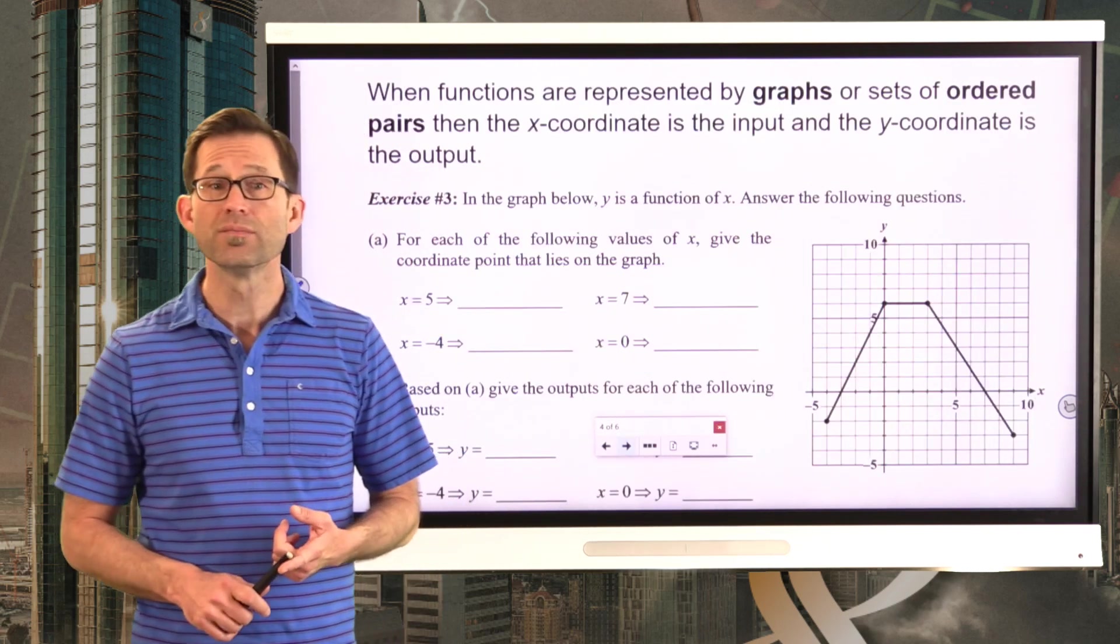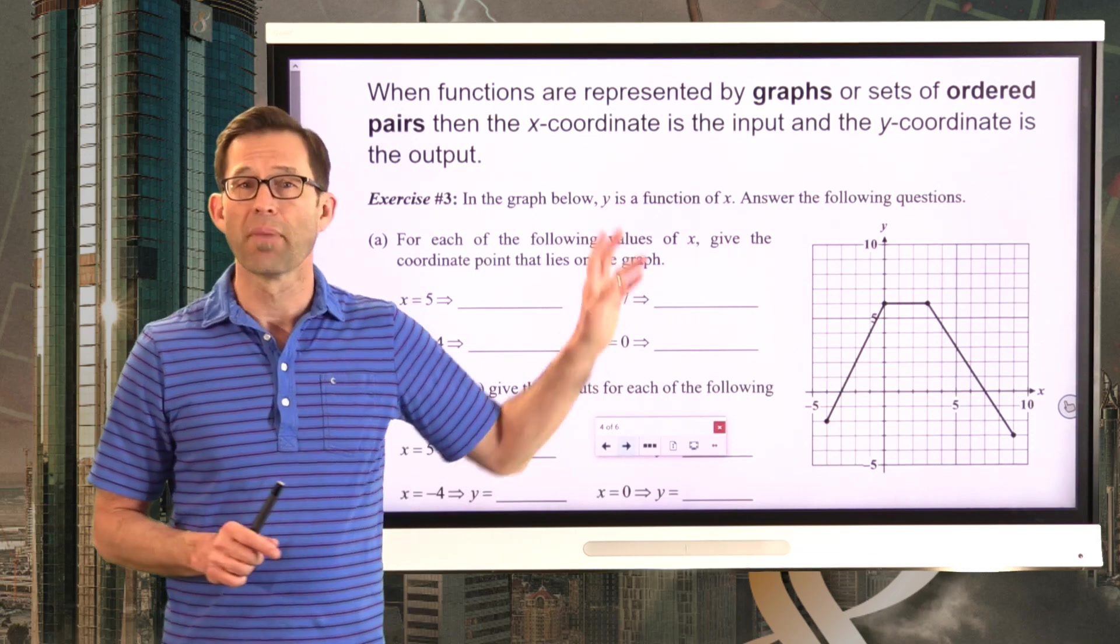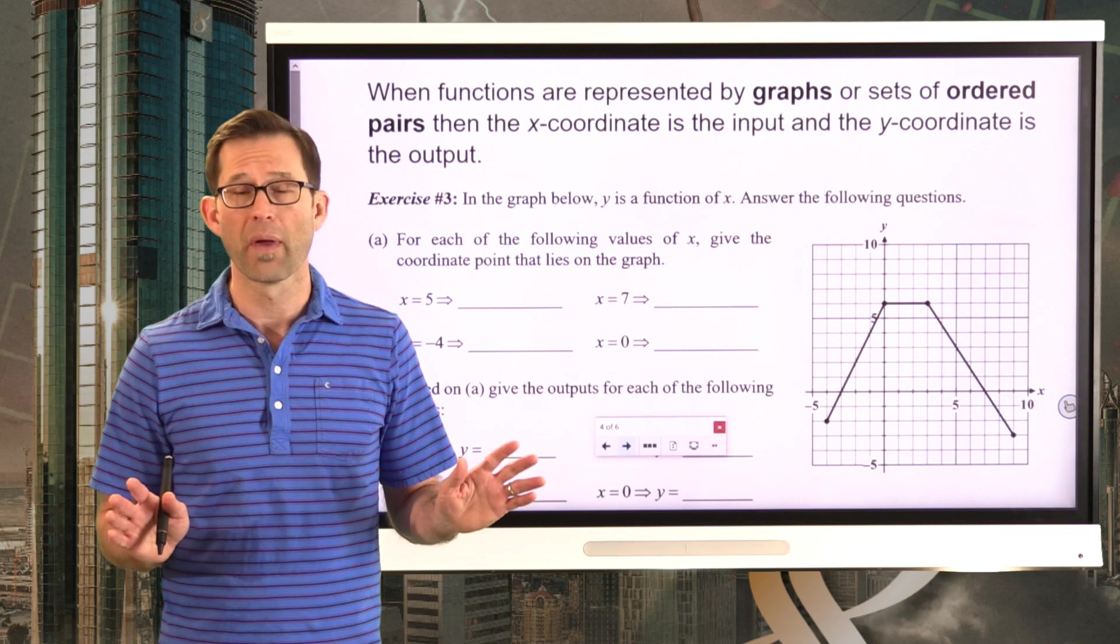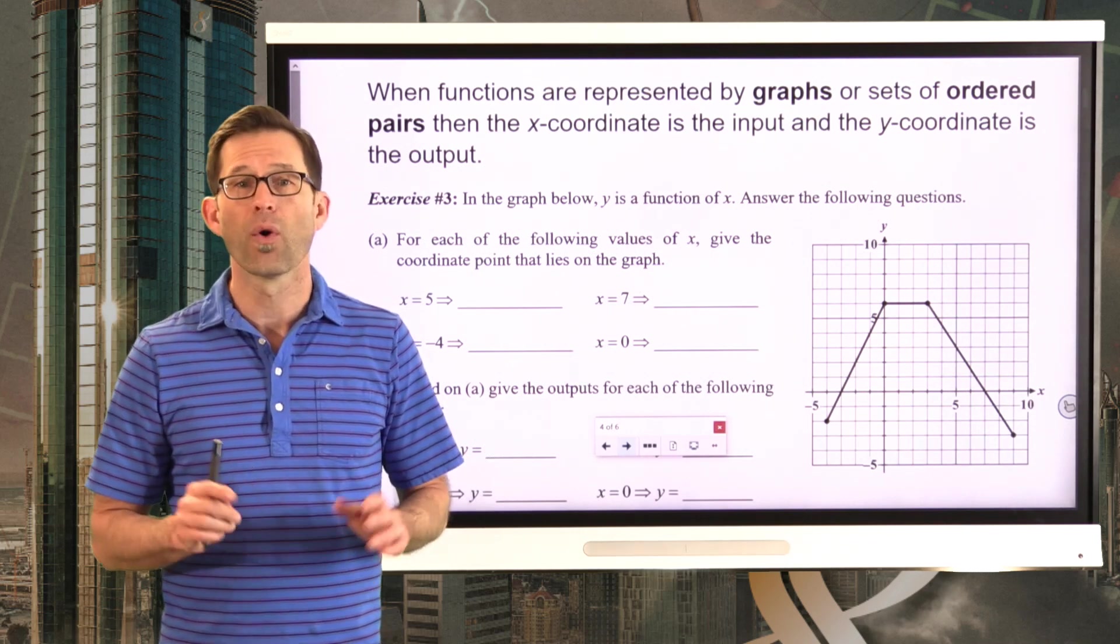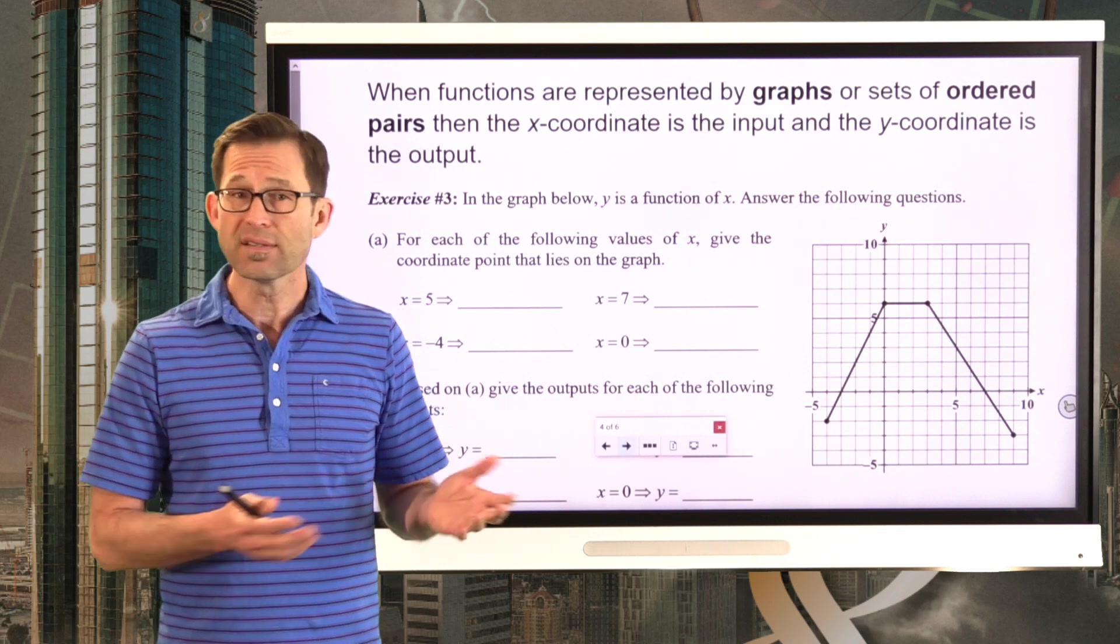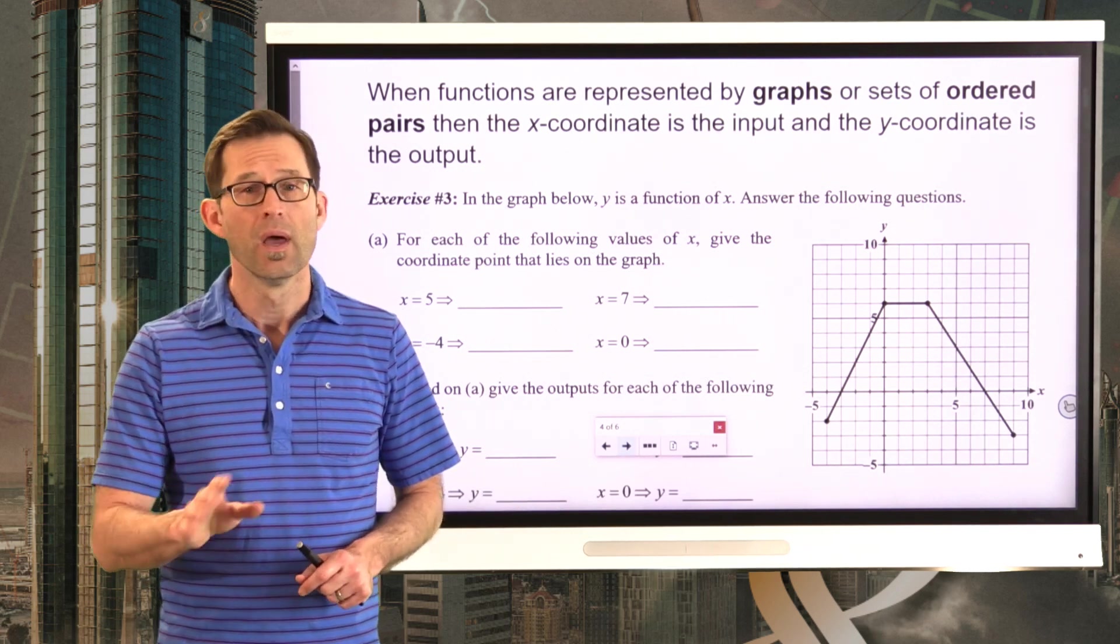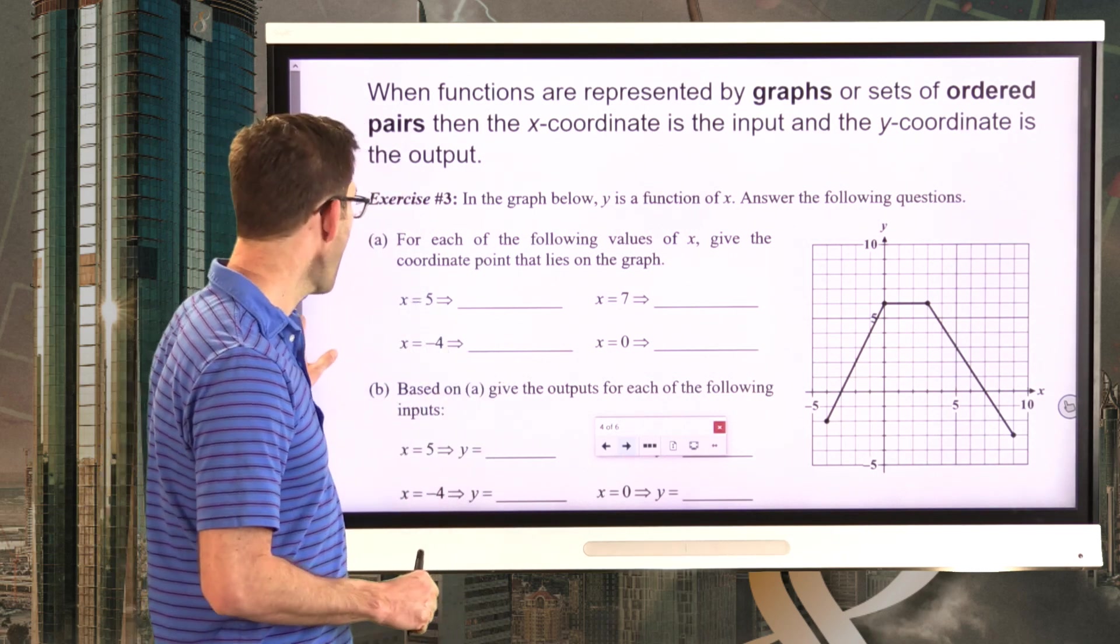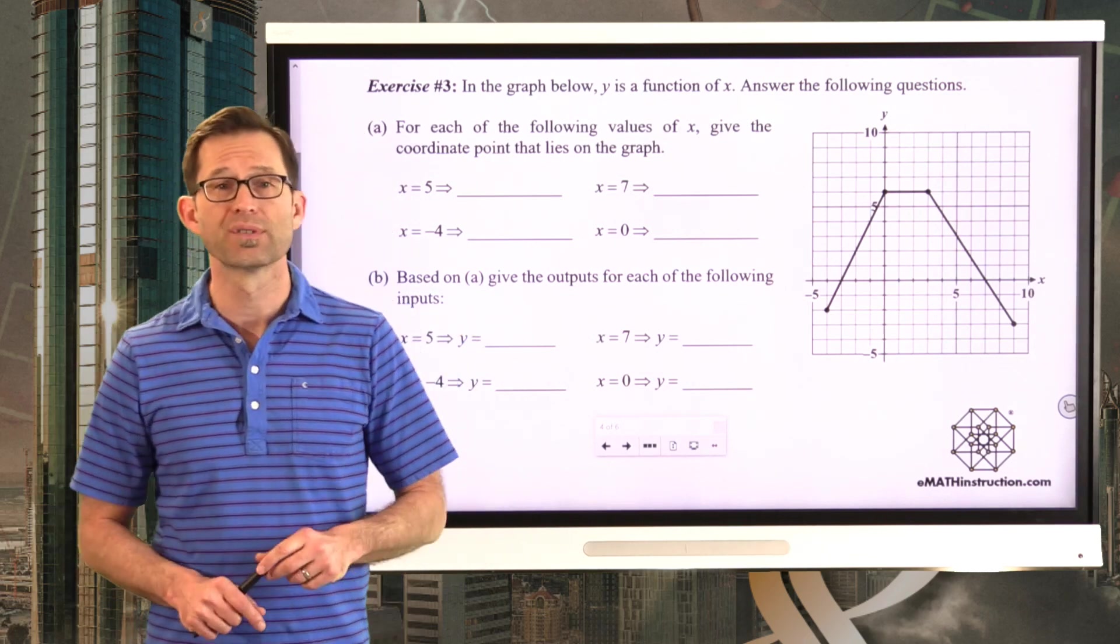We've seen tables. We've seen equations. Now, when functions are represented by graphs, which is going to be the next thing that we look at, or sets of ordered pairs, either way, the x-coordinate is the input, and the y-coordinate is the output. And again, that's exactly the way it was in the last problem when we had an equation. But with a graph, it's pretty much universal. So let's take a look at how we can use a graph to think about inputs and outputs of a function.